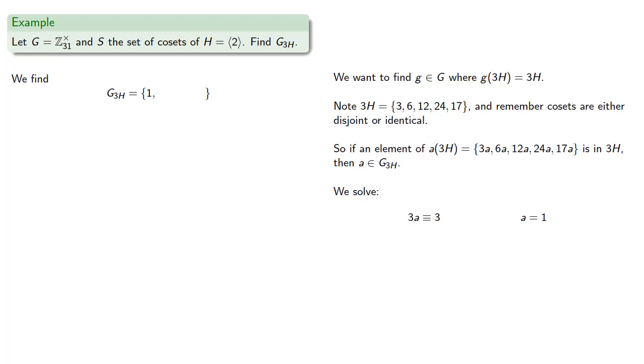Or maybe this element 3A is 6, and we solve and find, and so 2 is another element of our stabilizer. And similarly, maybe 3A is 12, giving us 4 as an element of the stabilizer.